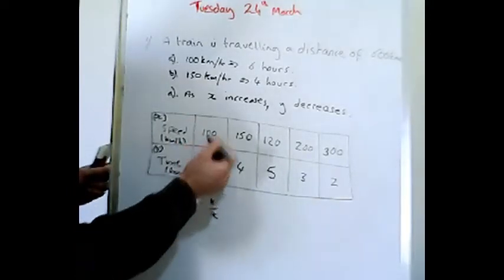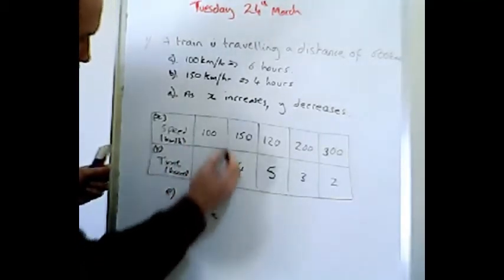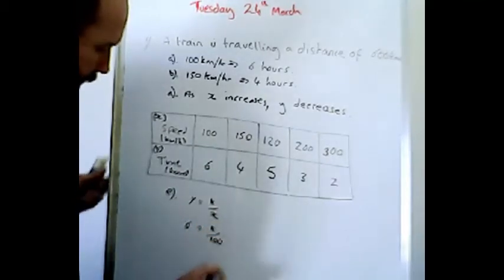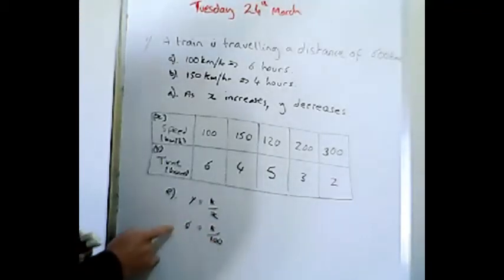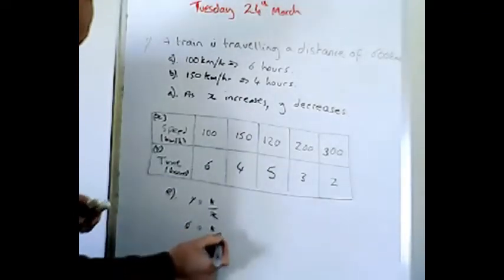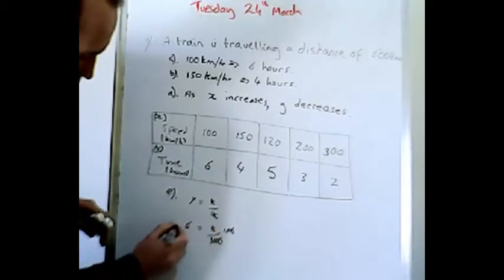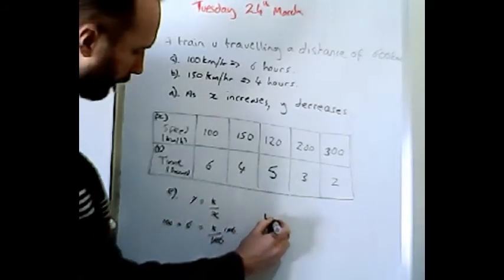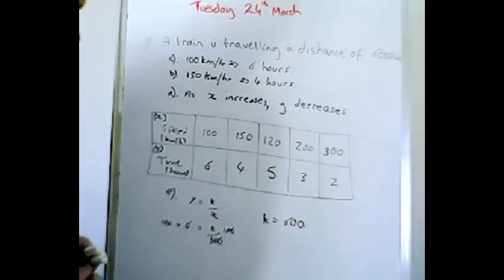So we've got speed here, we've got six equals k over 100. All right, so if we multiply these out, in this case we times by 100 on this side, and we have to times by 100 on this side. So here we've got k equals 600.